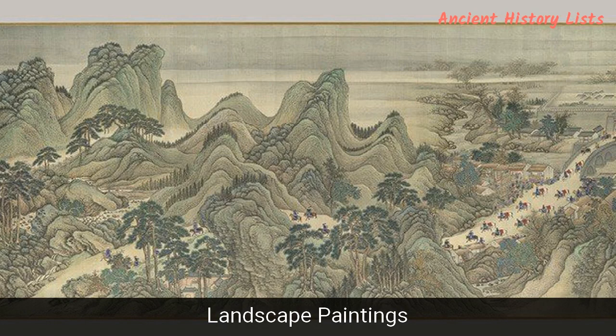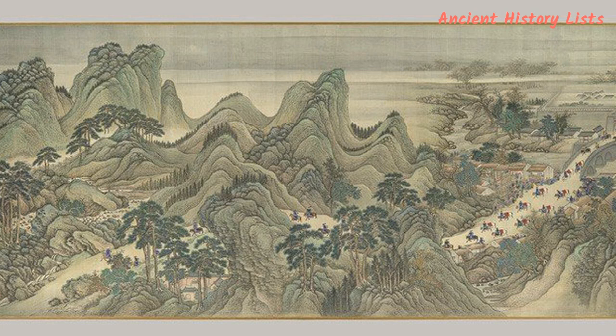Number 4: Landscape Paintings. China has produced some of the finest landscape paintings from the Five Dynasties period, 907–960 AD, to the Northern Song period, 960–1127 AD. This period is also known as the Great Age of Chinese landscapes. There were two distinct techniques popular in ancient China. In the north, paintings of towering mountains were famous, painted with ink wash, black lines, and sharp dotted brush strokes. Popular artists in this style were Guo Xi, Fan Kuan, and Jing Hao.